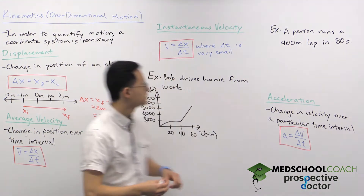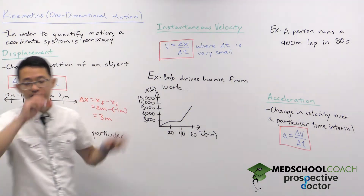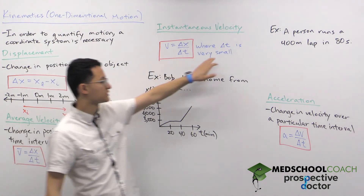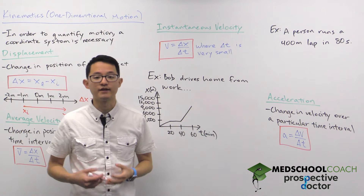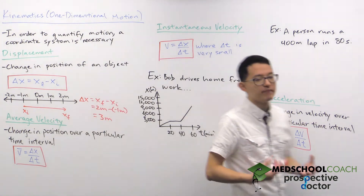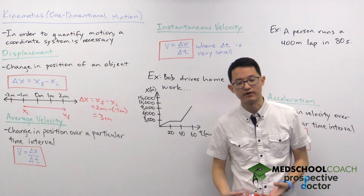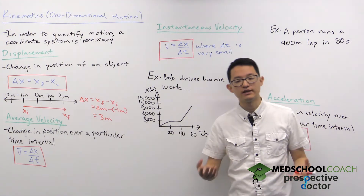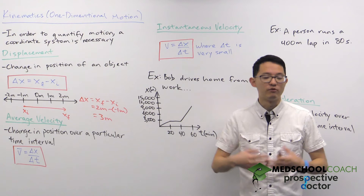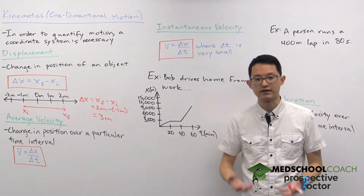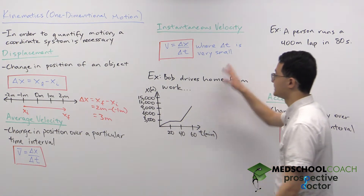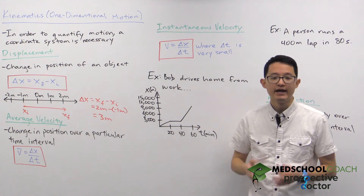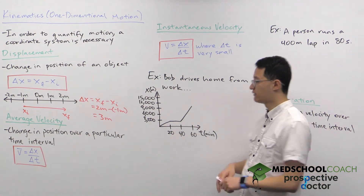The equation for instantaneous velocity is very similar — it's also change in position over time — but the main difference is that instantaneous velocity uses a very, very short time interval. Average velocity generally looks at long time intervals, considering the entire motion: what was the displacement over the total time? Instantaneous velocity is not looking at the entire motion; it's asking at this very instant in time, how fast is the object moving?